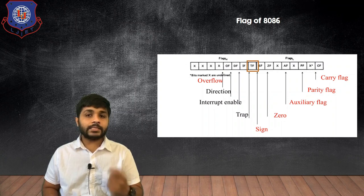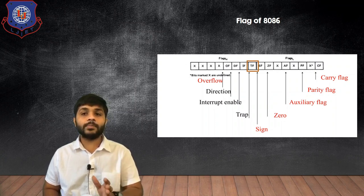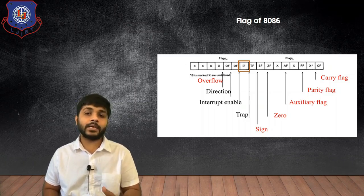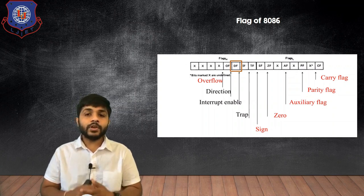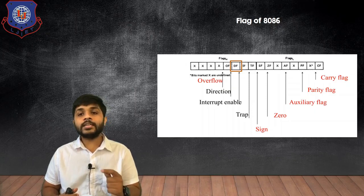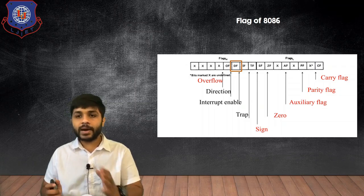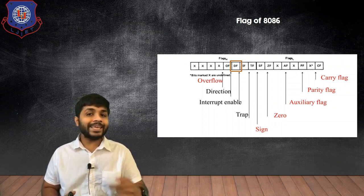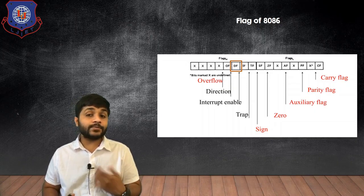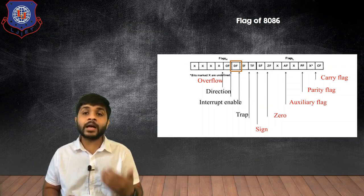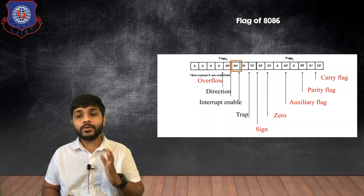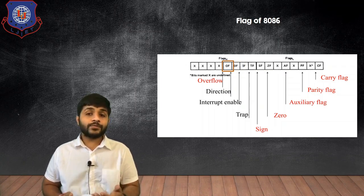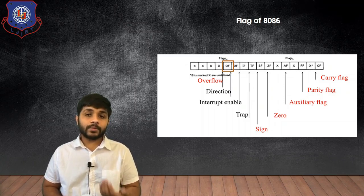The Trap Flag, when set, causes the microprocessor to work in debug mode. The Interrupt Enable flag is used to enable all the interrupts in the 8086. The Direction Flag controls whether the program counter is incremented or decremented: when the direction flag is 1, the program counter is incremented after every instruction; when it is 0, the program counter is decremented after every instruction.